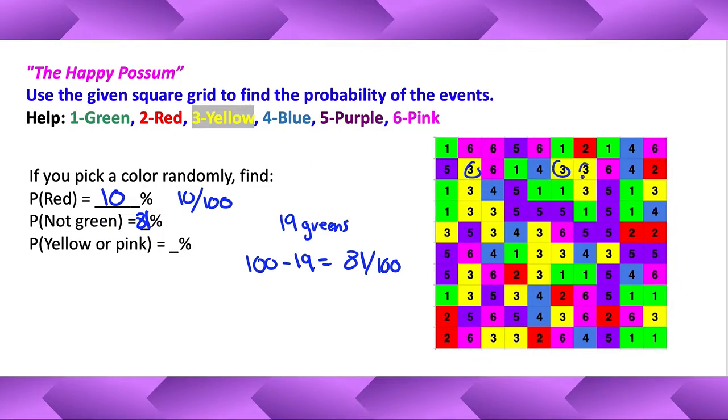Alright, let's do yellows. Yellows are pretty easy to spot. Let's go left and right. Counting: 1, 2, 3, 4, 5, 6, 7, 8, 9, 10, 11, 12, 13, 14, 15, 16, 17, 18, 19, 20, 21, and 22. Okay, so there's 22 yellows.